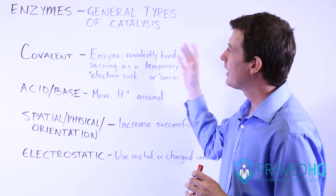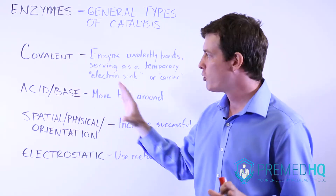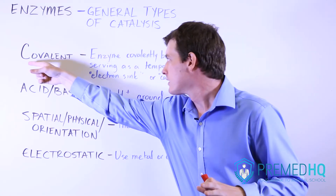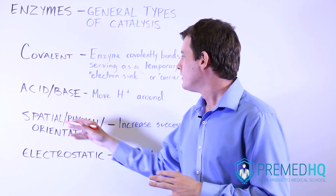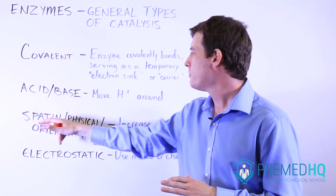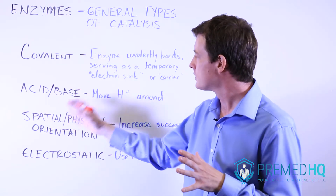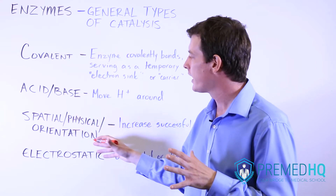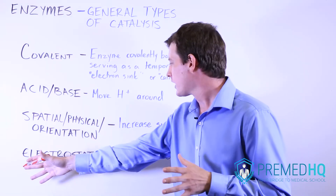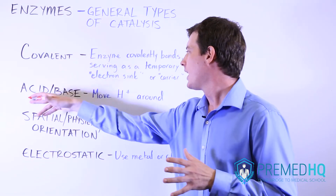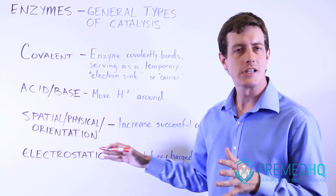With that we have four main categories — some people divide it into more subtypes, but essentially we'll have covalent catalysis, acid-base catalysis, catalysis based on changing the spatial, physical, or orientation of the reactants (which could be described as a spatial, physical, or orientational catalyst), and also electrostatic catalysis.